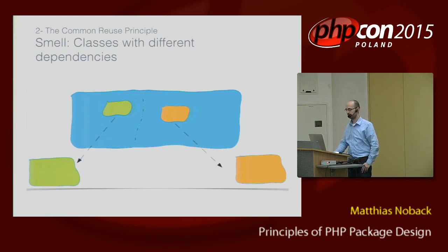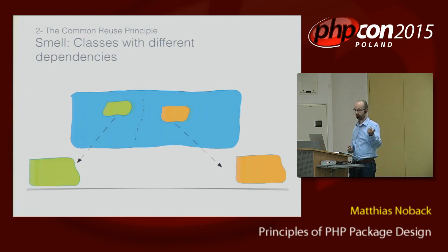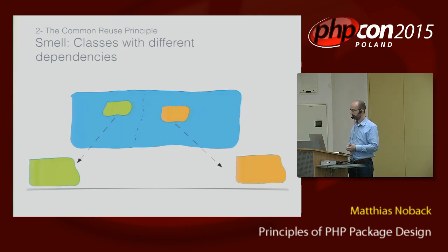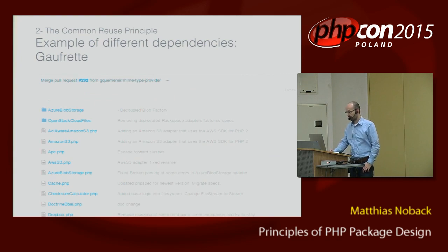Another smell about packages can be that there are classes with different dependencies in it. The green class needs another package — the green package — to be able to work successfully, and there is also an orange class which needs another orange package as a dependency. If you only use the green class, you only need the green package. If you only use the orange one, you only need the orange package. There are so many examples of this problem out there. For example, in the Gofret package.